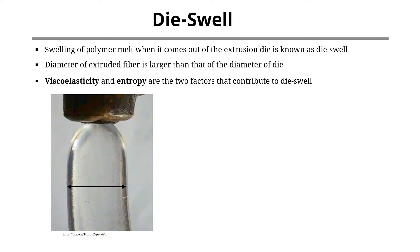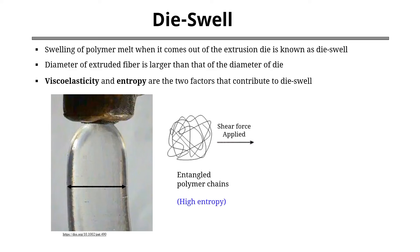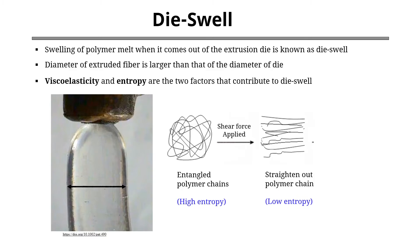In a polymer melt, chains are present in coiled form and the entropy of the melt is very high. When a polymeric material goes inside the die, it undergoes high shearing. Due to the applied shearing force, polymer chains start to uncoil and straighten up. As a result, entropy goes down.